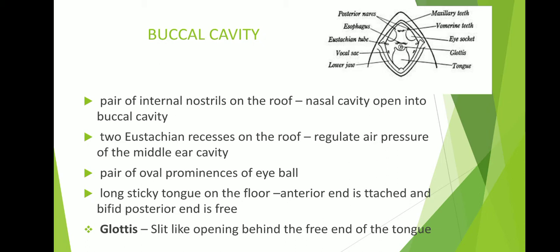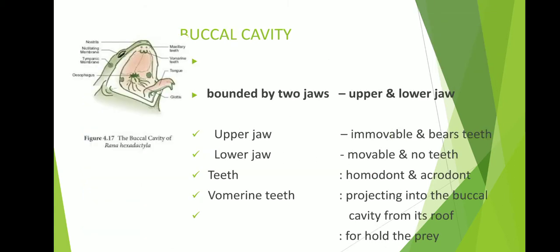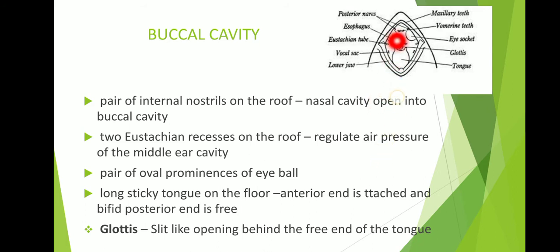The roof of the buccal cavity contains a pair of small openings known as internal nostrils, by which the nasal cavity opens into the buccal cavity. In addition, inside the buccal cavity, we can see two eye sockets. The eyeballs are not enclosed in bony sockets but bulge inwards as a pair of oval prominences in the roof of the buccal cavity. While swallowing food, the frog depresses the eyes, causing the orbits to bulge inwards and push the food towards the pharynx.